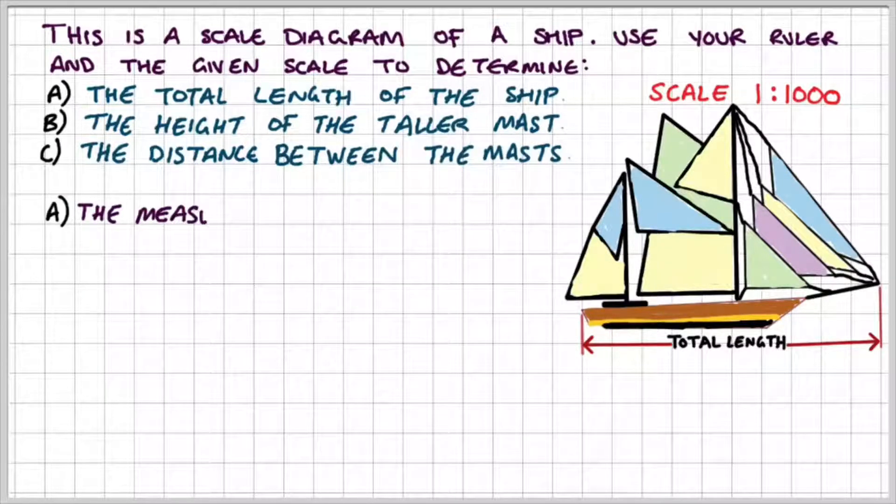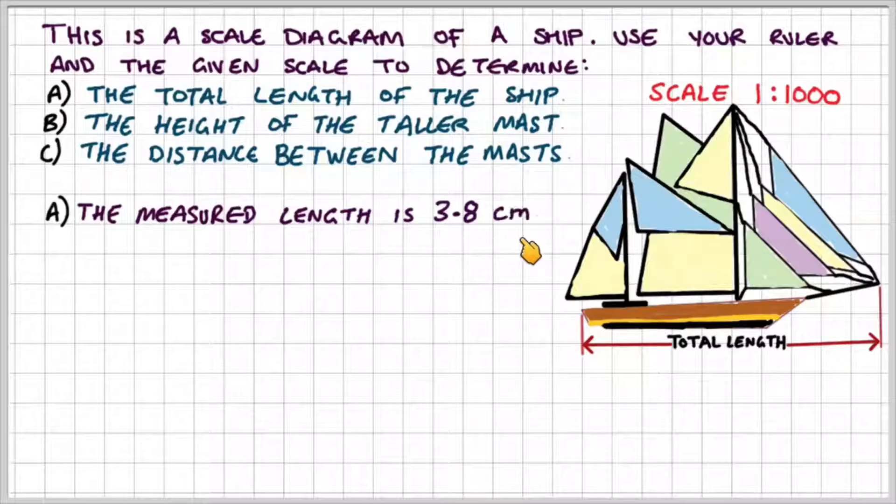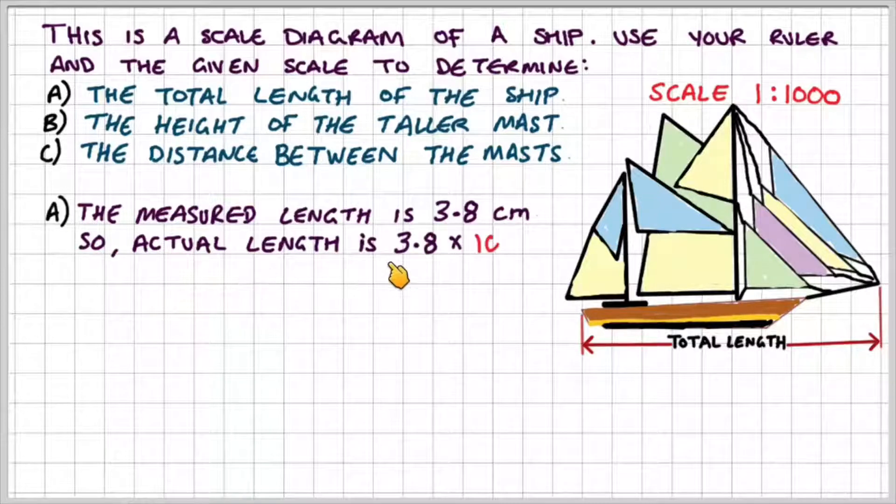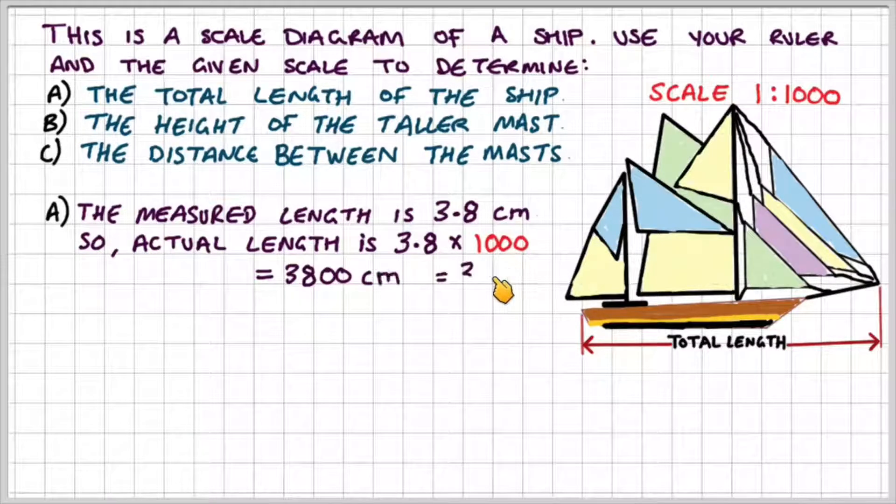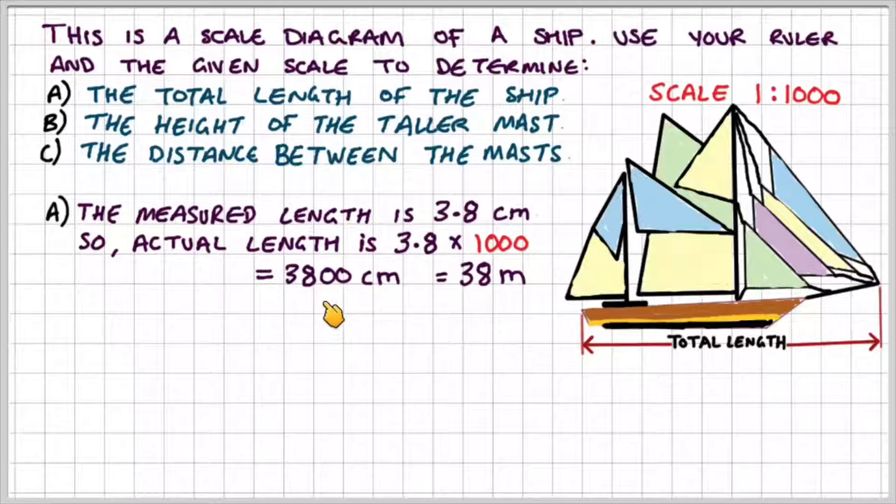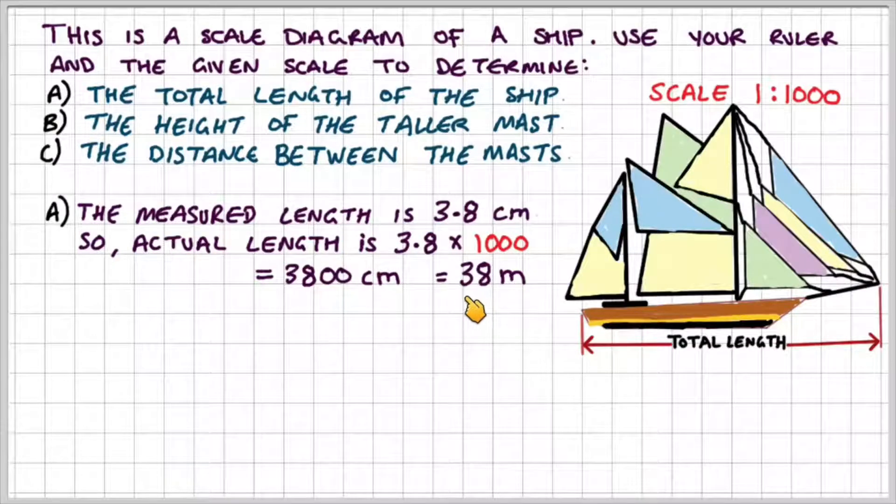So for part a I measured a length of 3.8 centimeters. You just replace this with whatever you've measured this for. So then the actual length is 3.8 times a thousand which is 3,800 centimeters or 38 meters.